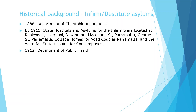By 1911, the Government Asylums Branch administered state hospitals and asylums for the infirm and destitute at Rookwood, Liverpool, Newington, Macquarie Street and George Street Parramatta, cottage homes for aged couples at Parramatta, and the Waterfall State Hospital for consumptives. On 1 March 1913, the Department of Public Health assumed responsibility for the administration of the Government Asylums Branch when the Department of Charitable Institutions, then known as the Metropolitan Hospital and Charities Department, became amalgamated with the Department of Public Health.